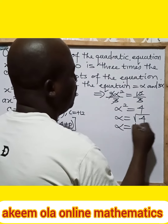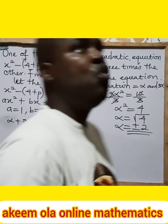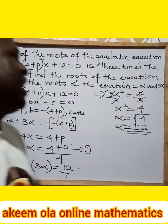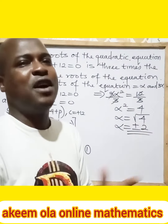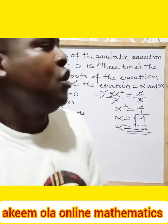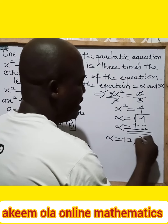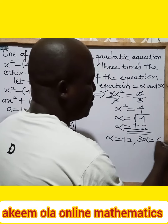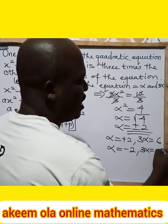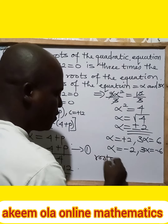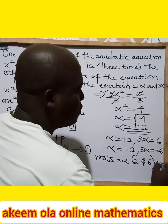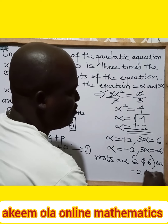That means we are going to have our alpha equal to plus or minus 2. Whenever you find the square root of any number, the answer will always be plus or minus that particular value. So from here, the value of alpha is plus 2 or minus 2. If alpha is equal to plus 2, then 3*alpha will now be 3 times 2, which gives us 6. And if alpha is equal to minus 2, then 3*alpha will now be equal to minus 6. So the roots are 2 and 6, or minus 2 and minus 6.